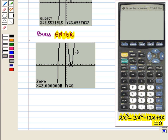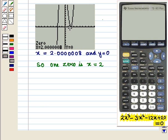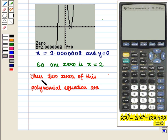So on the screen the zero or root is displayed and we get x = 2.0000008 and y = 0. So we say that one zero is x = 2. But the curve only touches at this point and does not intersect the x-axis, so we have a double root here. Thus two zeros of this polynomial equation are x = 2 and 2.